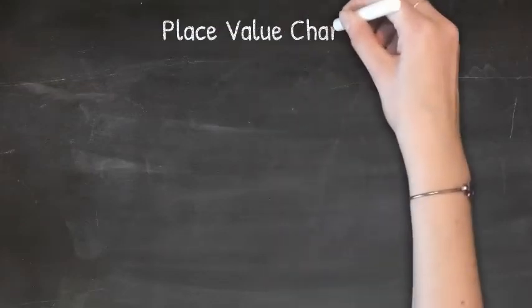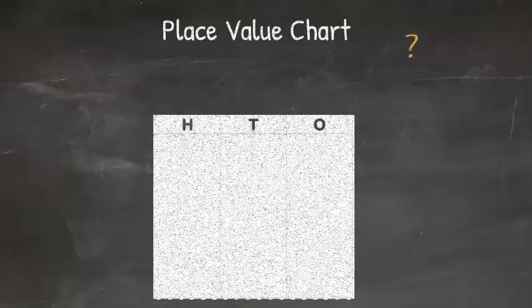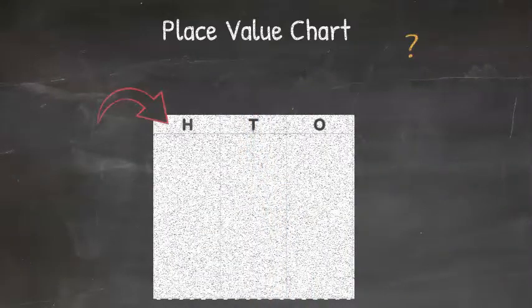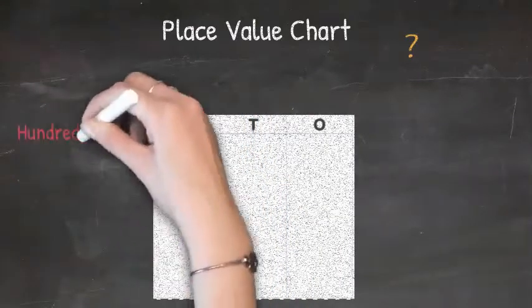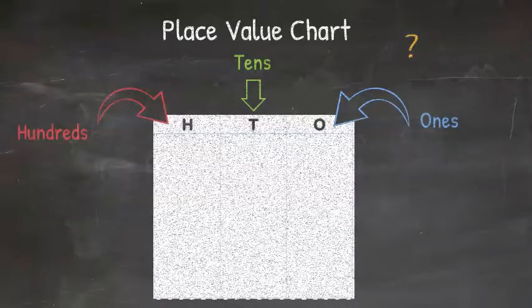When trying to understand place value, knowing how to use a place value chart or table will certainly help you. So, what is a place value chart? It is a chart that has columns that represent a specific place value. If you look at the following example, it has three columns as we are only working with three digits today. The first column is labeled H for the hundreds value, T for the tens value, and O for the ones value.